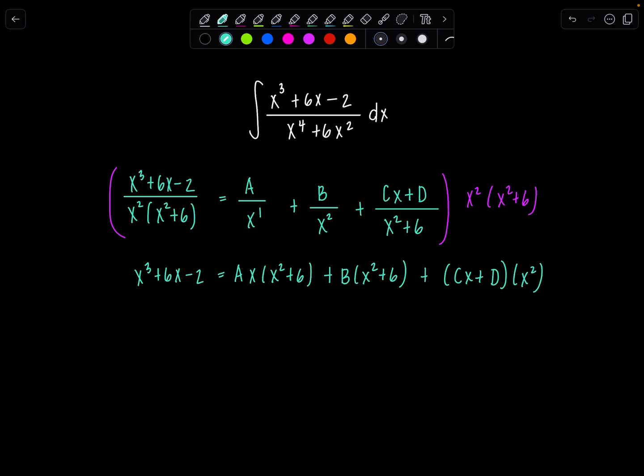Now sometimes when you're solving for the constants A, B, C, D, you can just substitute in different values of x that would make some of the factors 0 and solve really easily. When you have an irreducible quadratic, though, there isn't any real number that you could substitute in that would make this 0.